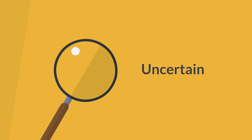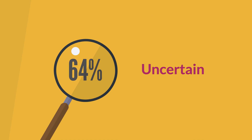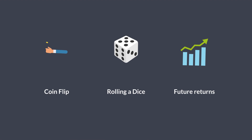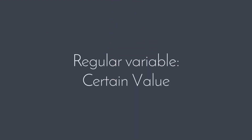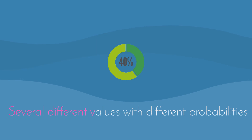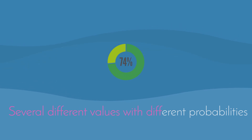Random variables are the ones whose possible values are uncertain. Specifically, if we have a random event such as flipping a coin, rolling a dice, or forecasting future returns, random variables quantify the outcomes of these random events. Unlike a regular variable that takes some certain value, a random variable can take many different values with different probabilities.